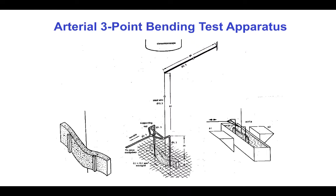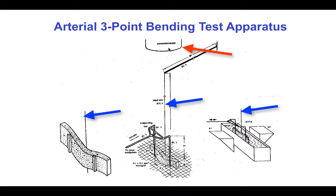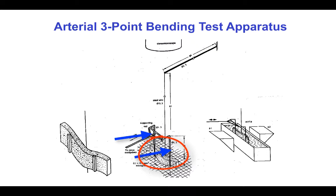This three-point bending apparatus was designed by Y.C. Fung to test small strips of artery wall. The bending moments are calculated from the force in the middle wire, which is calibrated from its deflection, measured from above by a stereomicroscope that also records the bending of the sample in the bar, as the other two ends of the three-point bending system are displaced with a micromanipulator.